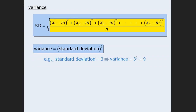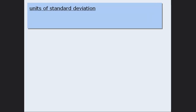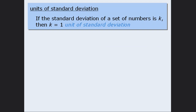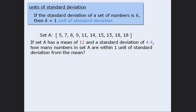That's pretty much all you need to know about variance. The next concept to discuss is units of standard deviation. A unit of standard deviation is the same as the standard deviation of a set. So if the standard deviation of a set of numbers is k, then k equals 1 unit of standard deviation. Since the standard deviation of set A is 4.4, then 4.4 equals 1 unit of standard deviation.